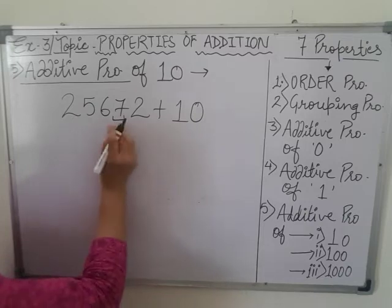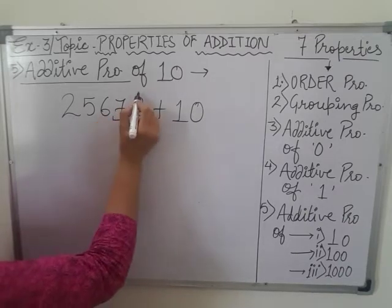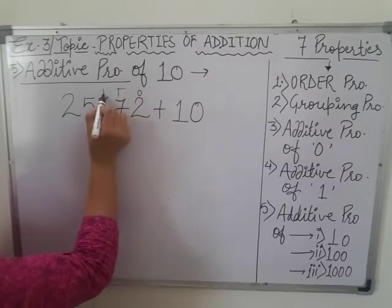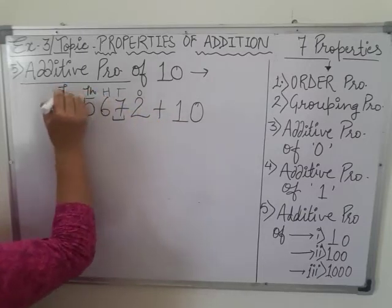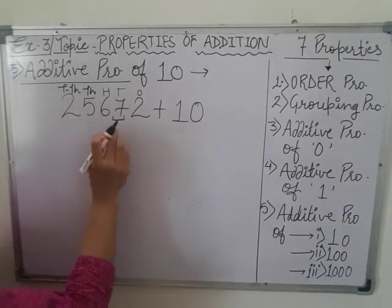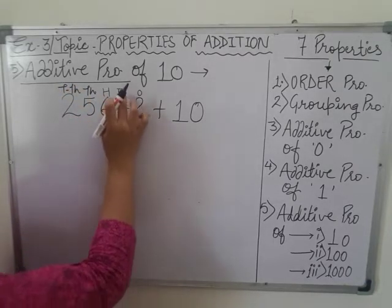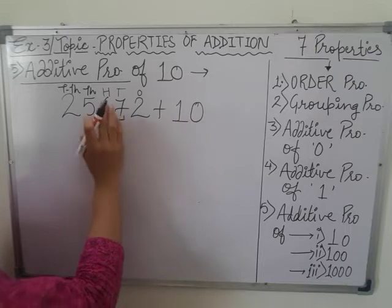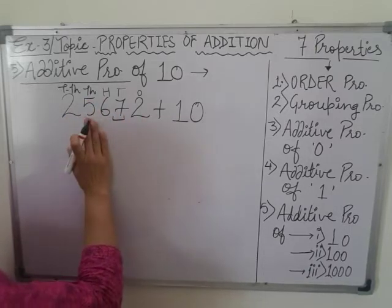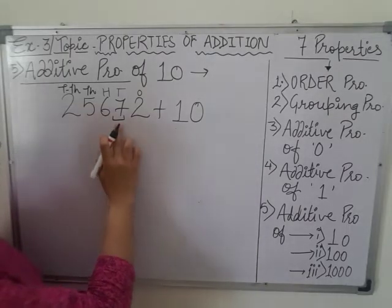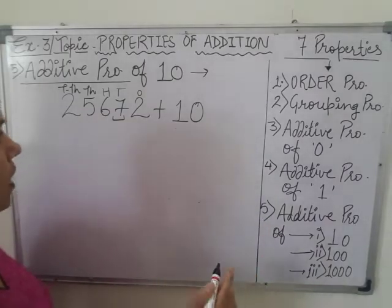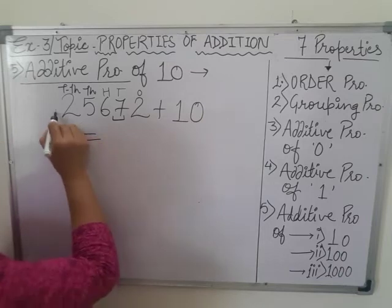Here, we can see that 7 is in 10th place. We are writing all the places: 1's, 10's, 100's, 1000's, 10,000's. So which digit is on 10th place? 7 is on 10th place. So if we are adding 10 to any large number, then the change only in 10th place digit and it will increase by 1. So the answer will be: